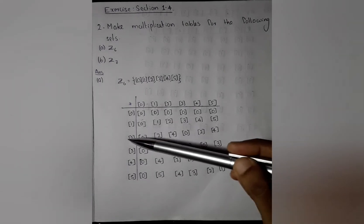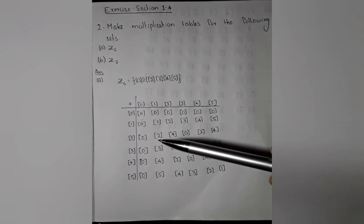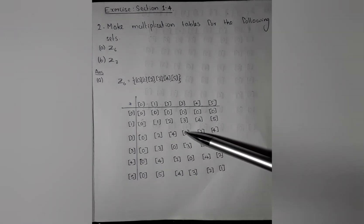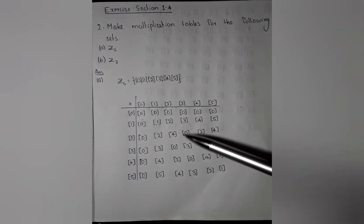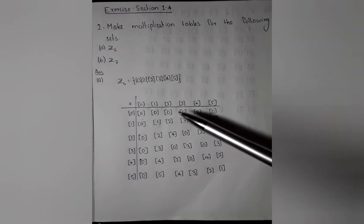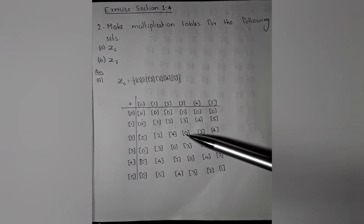2.12, 2.24, 2.3 is 0. Actually 2.3 is 6. When divided by 6, we get the remainder 0. So we can write 2 modulo.3 modulo is 0 modulo.